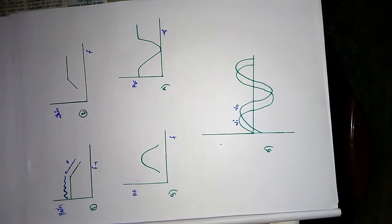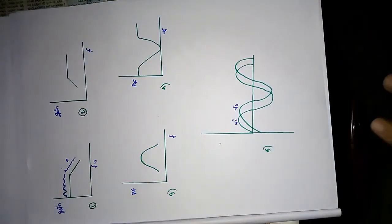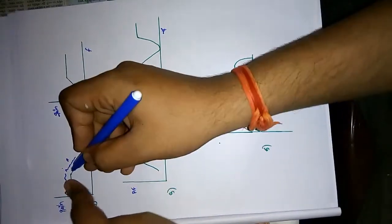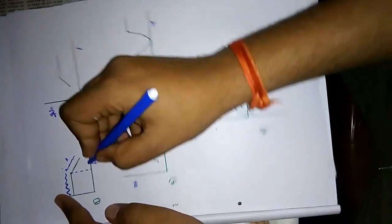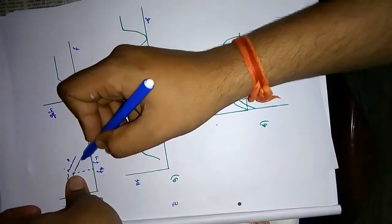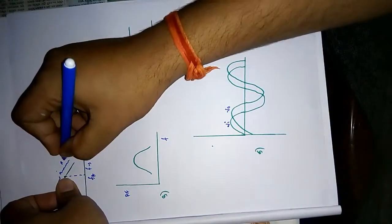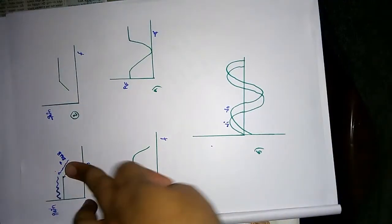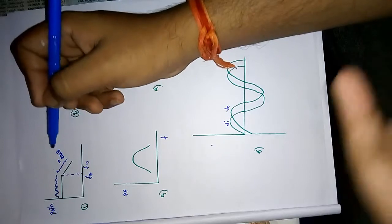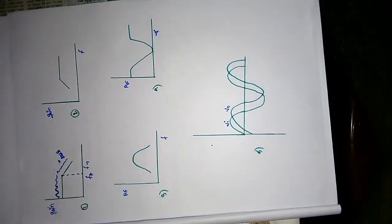For a low pass filter, it passes voltage at low frequency and at high frequency it continuously rolls off. At low frequency the gain is high, and at a certain frequency called the high frequency cutoff FH, it rolls off. The roll-off is 20 dB per decade for first order, 40 dB per decade for second order, and 60 dB per decade for third order.